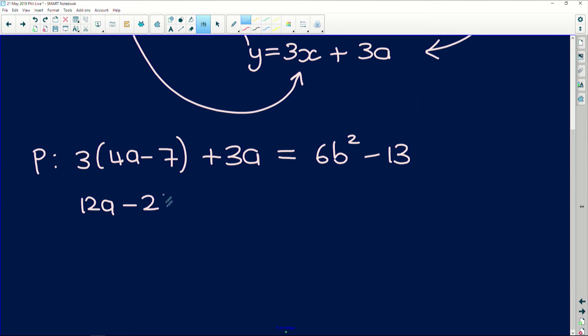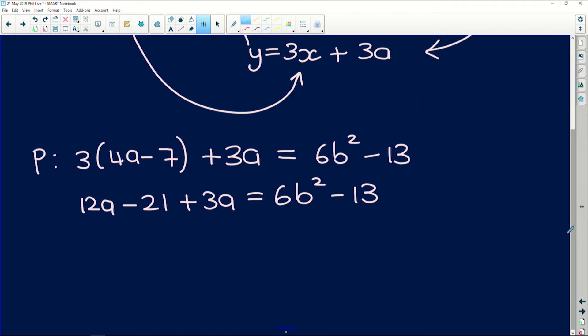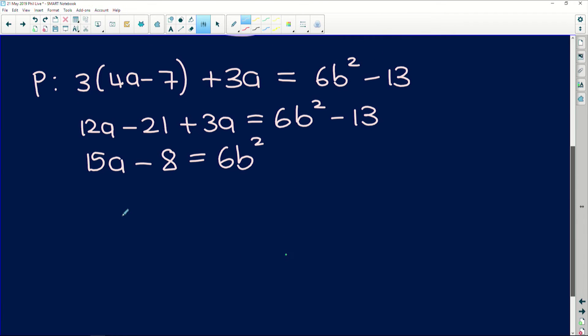So at p, y is equal to 3x plus 3a. Okay, so 3x was given to us as (4a minus 7) plus 3a. And we know that that is equal to the y value at p, which is 6b squared minus 13. Let's continue to manipulate this. So we get 12a minus 21 plus 3a is equal to 6b squared minus 13. Double check that. Perfect. Okay, if we continue to solve for or substitute and simplify this, we're going to get 12a plus 3a is 15a minus 21 plus 13 would give us minus 8 is equal to 6b squared.